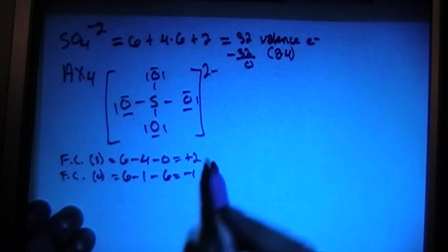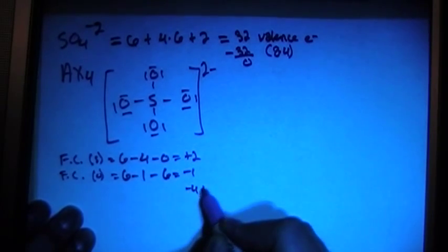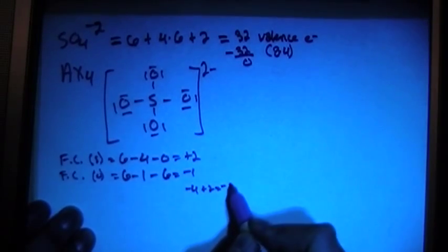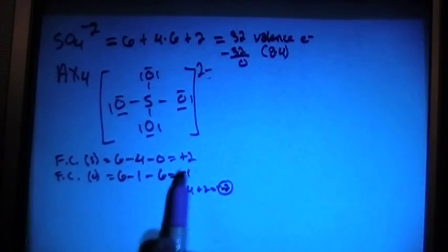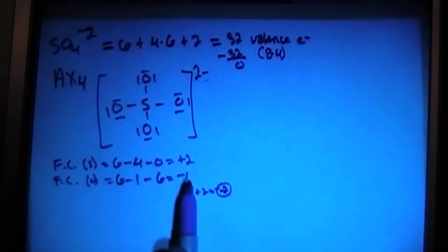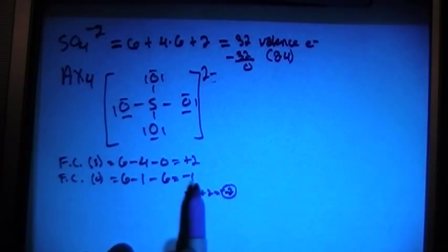So the sum, there's 4 of these, so negative 4 plus 2 is negative 2, which is correct and matches there.